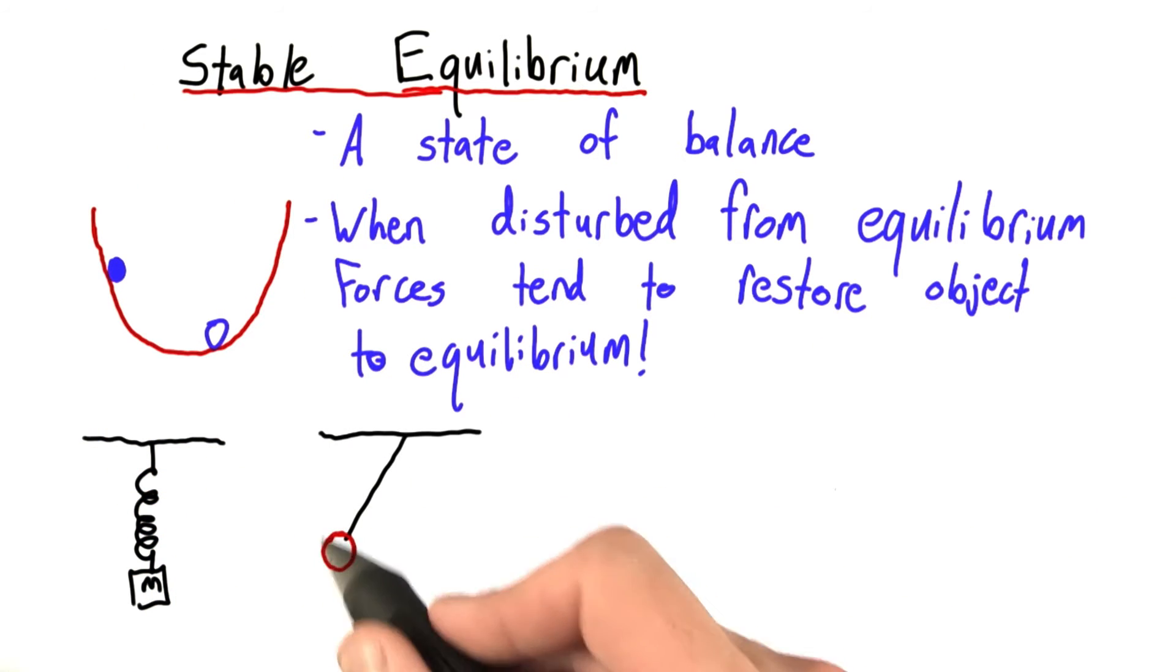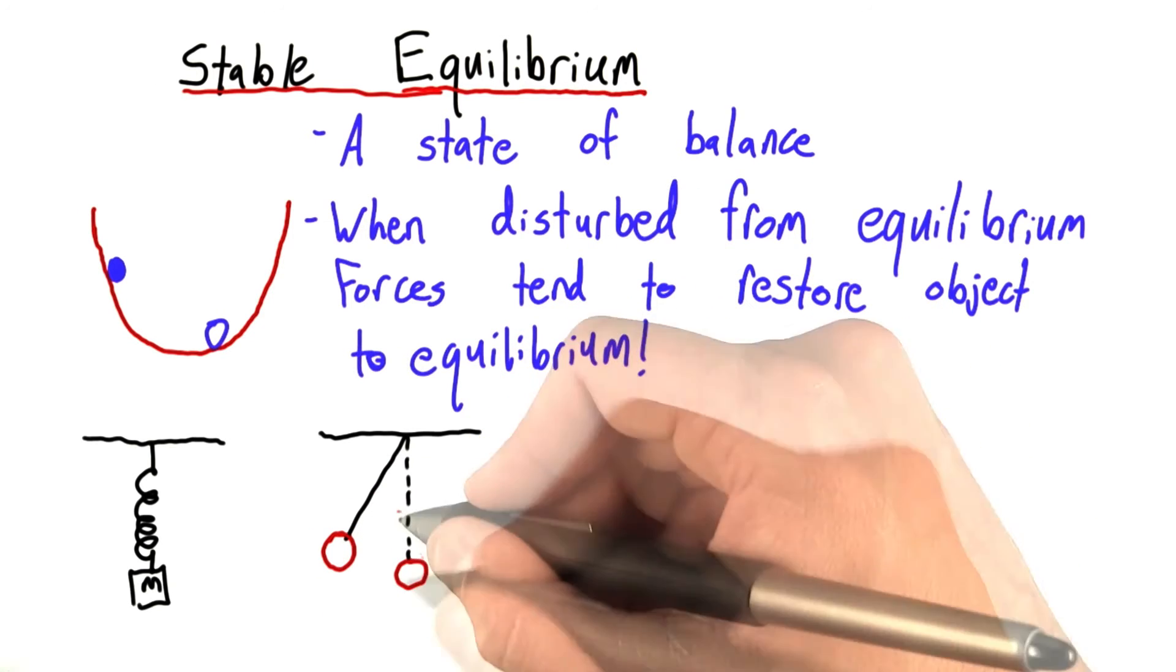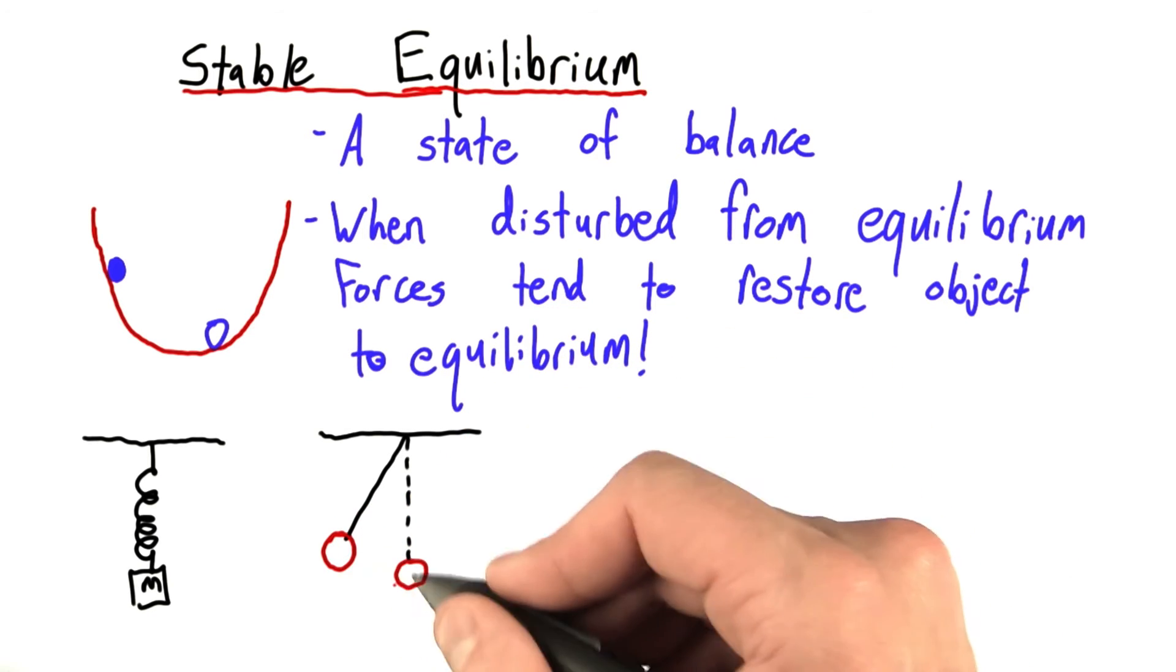Likewise with a pendulum, or a mass swinging from a rod, its default state, its equilibrium, is vertical. If we displace it from vertical, there will be some component of force, in this case gravity, which tends to restore it.